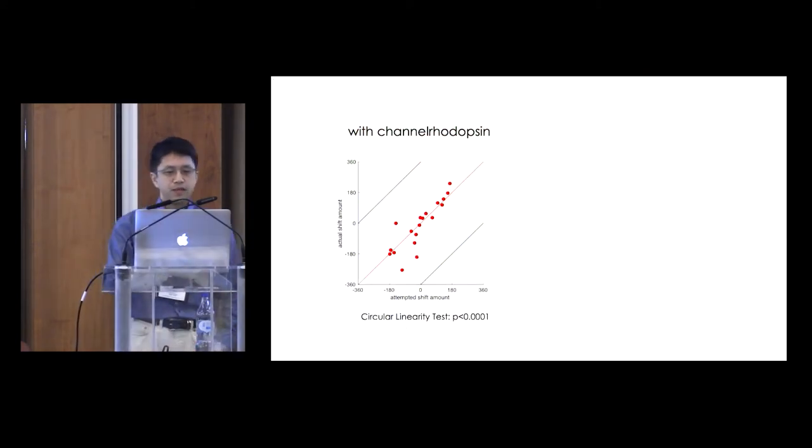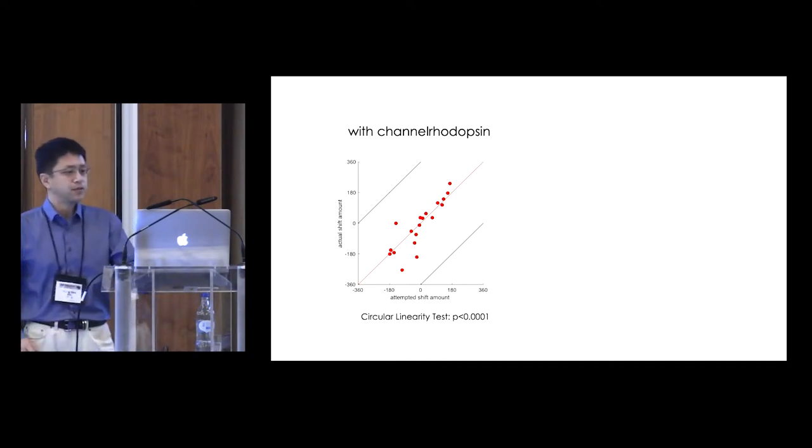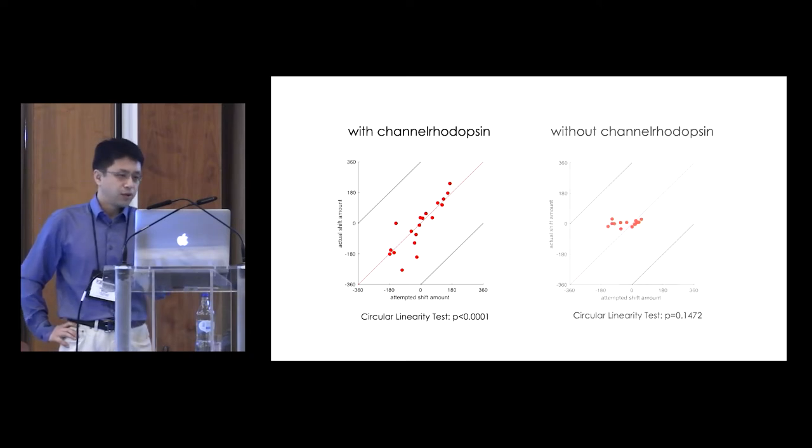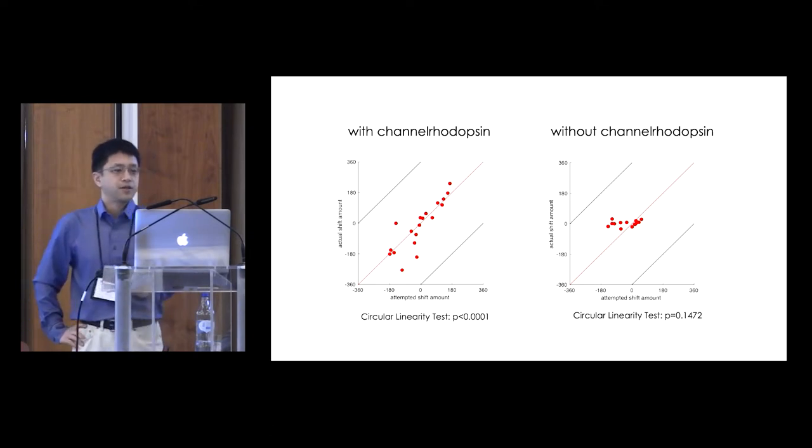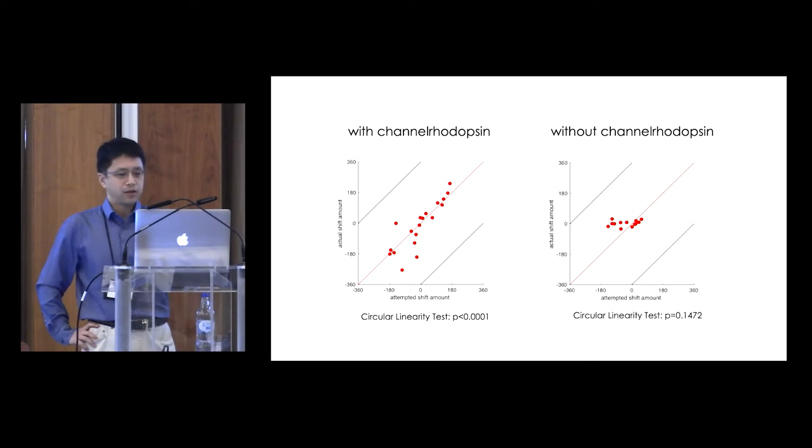We repeated this across many flies and here x-axis is the enforced offset shift amount and the y-axis is the actual shift amount. And data are aligned along the identity line. Without an optogenetic reagent, this pattern does not show up. This is clear evidence of experience-dependent plasticity or Hebbian-like plasticity somewhere between visual inputs and compass neurons.